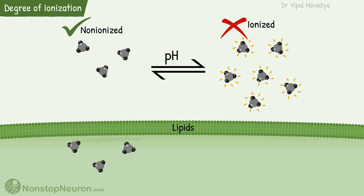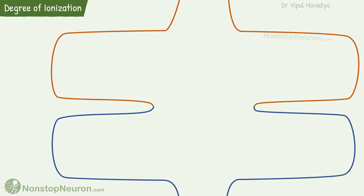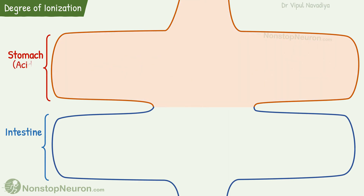The degree of ionization depends on the pH of the medium. In this schematic diagram, the upper part is the stomach and the lower part is the intestine. The stomach has an acidic medium due to acidic secretion, and the intestine has a basic medium due to basic secretion.